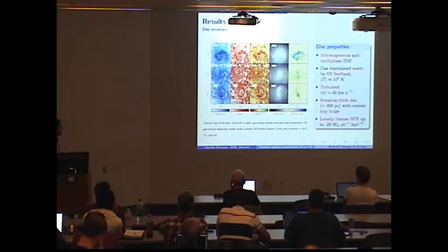And the gas is also highly turbulent, as shown in this velocity dispersion map, with the typical velocity dispersion of about 40 kilometers per second across the disk, and a V over sigma of about 2 or so.